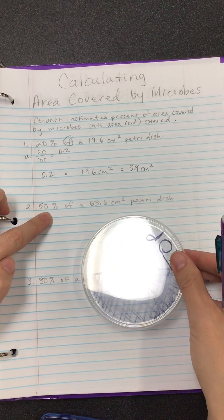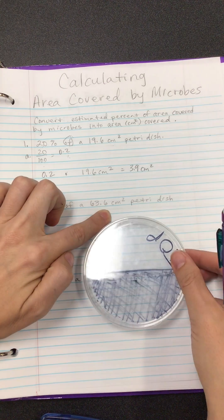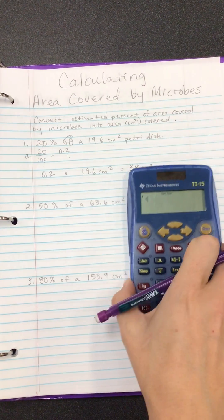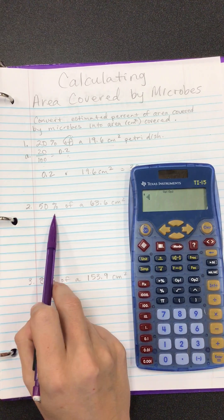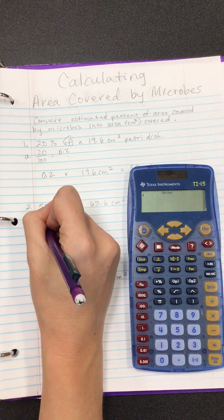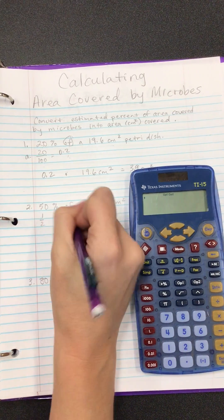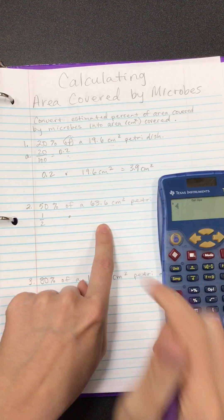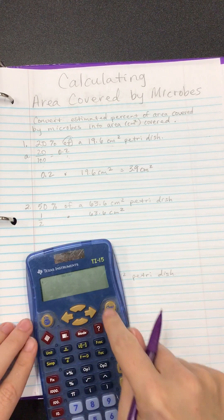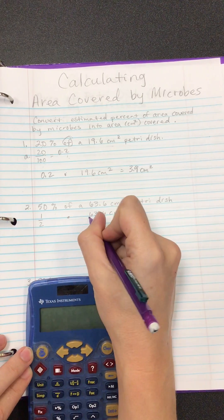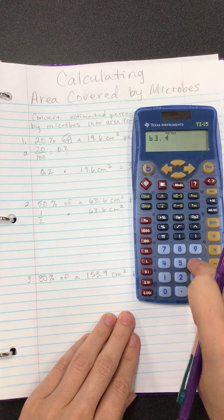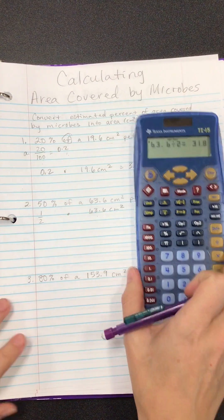In this case we have a larger petri dish. If about fifty percent of a sixty three point six centimeters squared petri dish is covered, how much area is that? Some people know off the top of their head that fifty percent equals one half, so you could do one half of sixty three point six centimeters squared — which is the same as dividing by two — sixty three point six divided by two equals thirty one point eight.